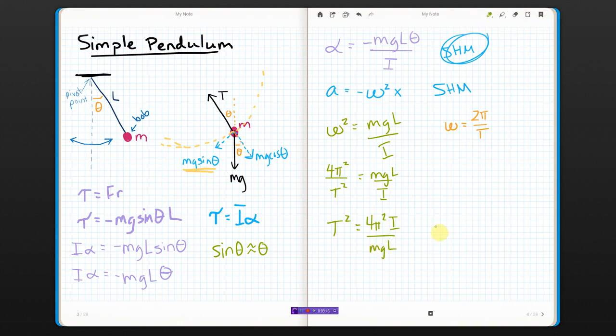Okay, so T ends up being, well, square root of everything. So, square root of 4 is 2. Square root of pi squared is pi. Square root of all this is the square root of all this.